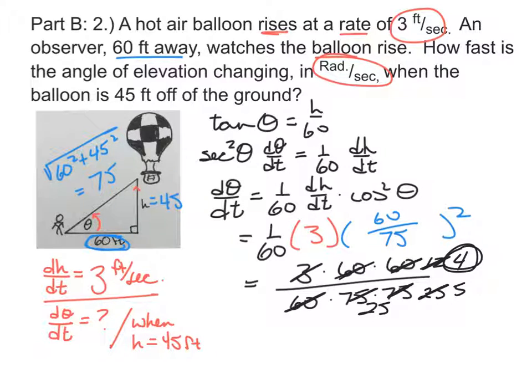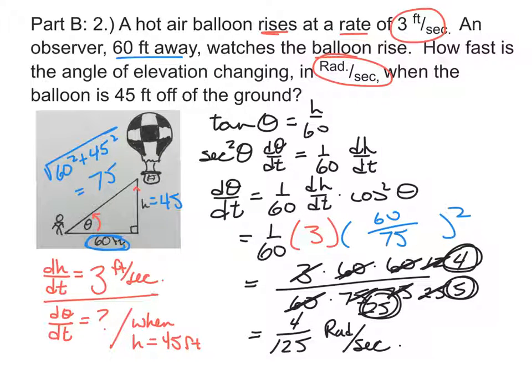Okay, so there we've got a 4. Then we've got a 5. And then we've got a 5. So this whole thing will simplify to 4 over 125. And then we're finding the rate of change and the angle of elevation in radians per second. So that's my units. Radians per second. Of course, if you wanted to find the decimal of that, it would be 0.032.